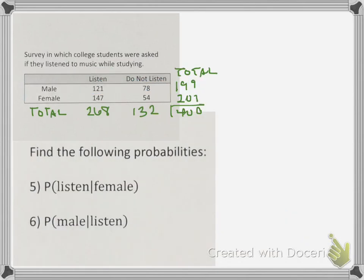So now if we look at two more additional questions, these are specific types of questions. Number five states the probability that somebody listens to music given that they are female. That's what that line means. So this line here means given. It's a vertical line, not a slash. In this case, when you have a given, that means you're looking out of a specific row or column total. We always look to the second one.